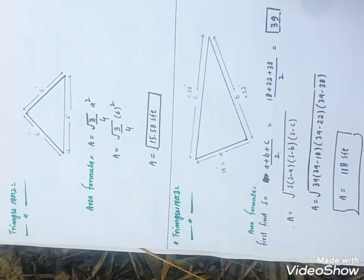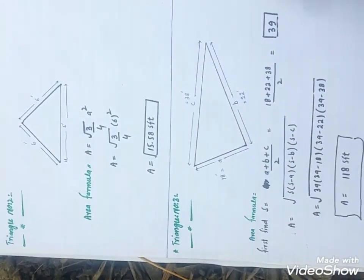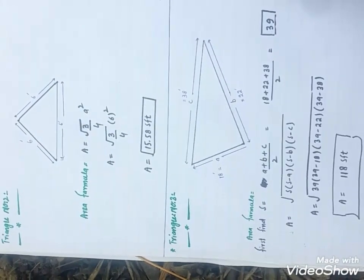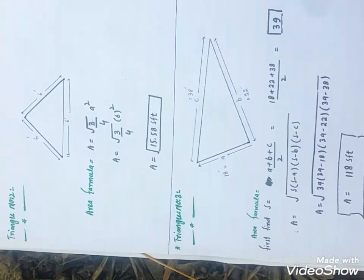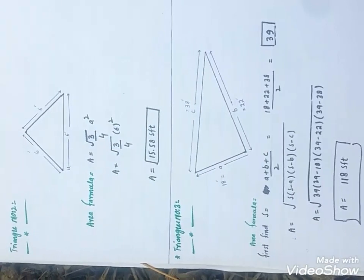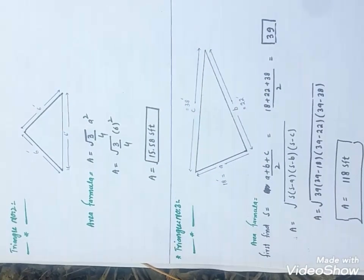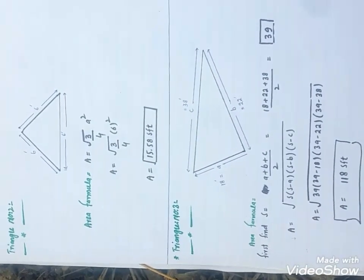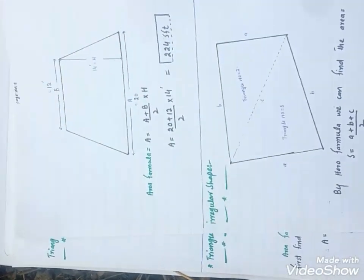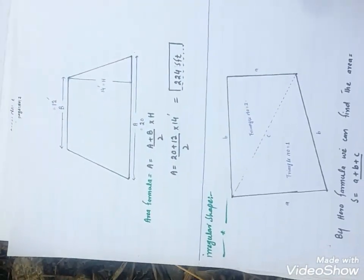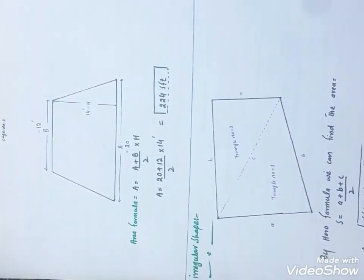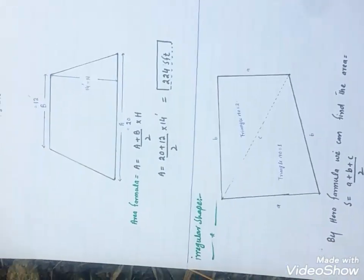This is another triangle where all sides are different from each other. This can be solved by Heron's formula, which is most commonly used for finding the area. This is another shape — a trapezoidal shape — and the following formula is used for finding its area.